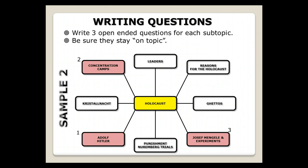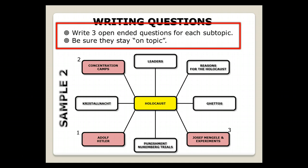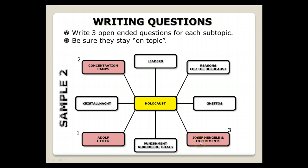We're going to talk right now about how to write good questions. The first thing, let's say I have my topic. Now I have my areas of focus or my three subtopics. You can see those here: Adolf Hitler, concentration camps, and Joseph Mengele. What I want to do now is I want to write three open-ended questions for each subtopic. I have to make sure though that my questions stay on topic.